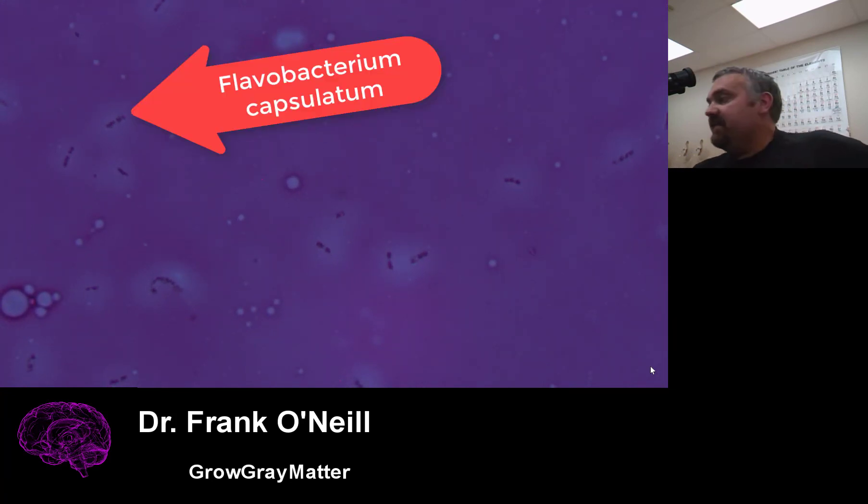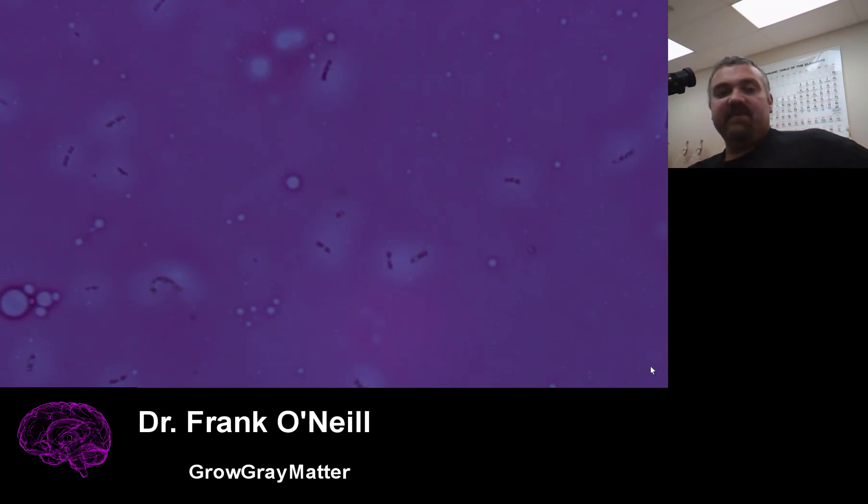Okay. So that's the negative stain or the background stain that allows us to visualize the capsule by the fact that they're not being stained. So that is another example of how to use the oil immersion objective. And that is a capsule stain.